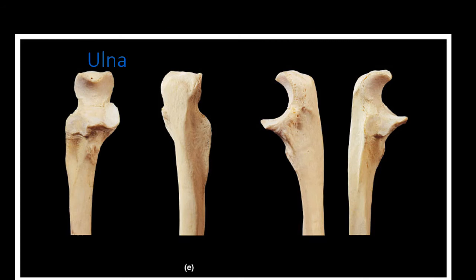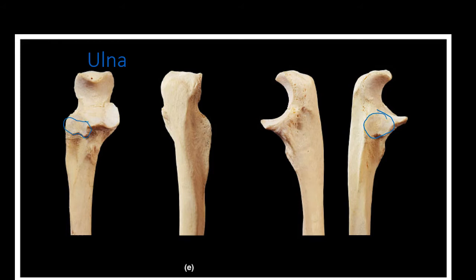A close-up of the proximal region of the ulna shows the olecranon process and the coronoid process. We can see the radial notch, which is the space where the radial head contacts the ulna. The U-shaped groove between the olecranon process and the coronoid process is the trochlear notch. In a sense, the ulna has a built-in U shape to help identify which bone you're looking at.